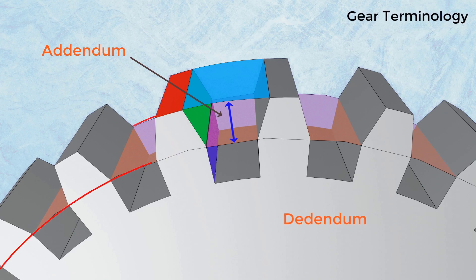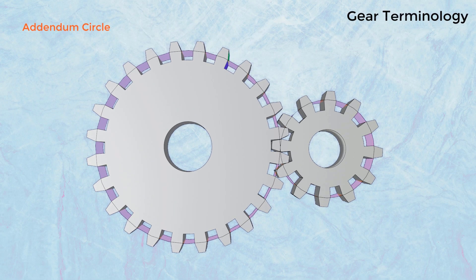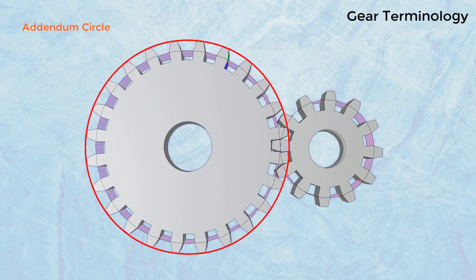Dedendum: The radial distance between the pitch circle and the bottom of the tooth is known as the dedendum of the gear. Addendum Circle: The circle drawn through the top of the teeth, concentric with the pitch circle, is called the addendum circle.